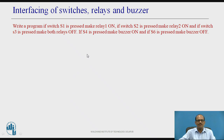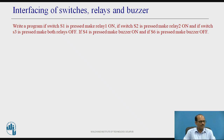Next is interfacing of switches, relays and buzzer. Write a program: if S1 is pressed, make relay 1 on; if S2 is pressed, make relay 2 on; if S3 is pressed, make both relays off; if S4 is pressed, make the buzzer on; and if S6 is pressed, make the buzzer off. This is an extension of the earlier programming task — the relay control for S1, S2, S3 remains the same, and the buzzer interfacing with S4 and S6 is added.